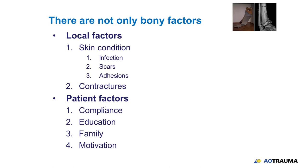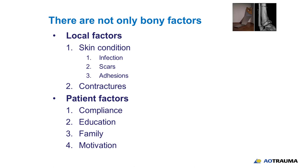Not only bony factors are important when we go for corrections. Local factors — skin condition, infections, scar adhesion, contractures — and don't forget patient factors: compliance, education, family motivation. This is very important and very often we neglect it. I remember three weeks ago we started forearm lengthening in a patient, and after two weeks we said we should not have done this, because the family is so non-compliant that we get a new problem every day. The problem is not the child — here it is the parents.